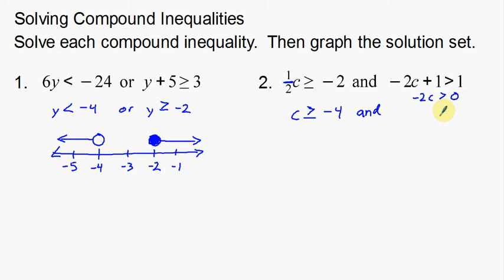The reason I put this example in here is to remind us that whenever you multiply or divide by a negative, you always have to switch your inequality. So here I'm going to divide by negative 2 and switch my inequality. Now, when I actually divide by negative 2, 0 is just going to stay 0.